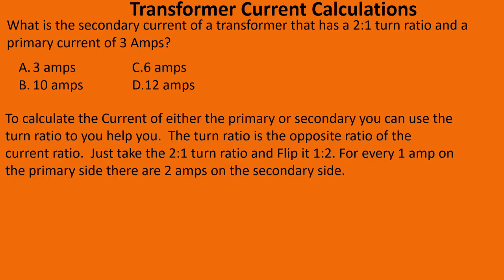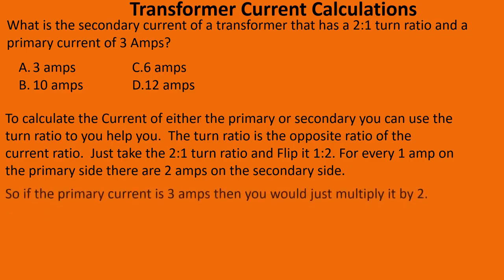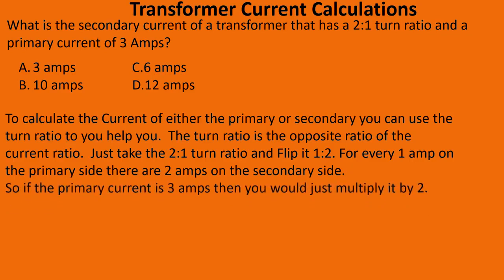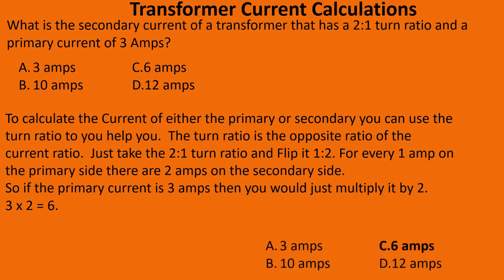For every one amp on the primary side there are two amps on the secondary side. So if the primary current is three amps, you multiply it by two: three multiplied by two equals six, so we select C.